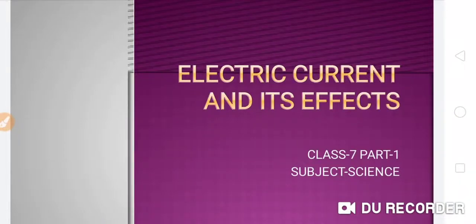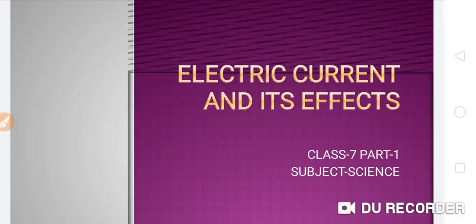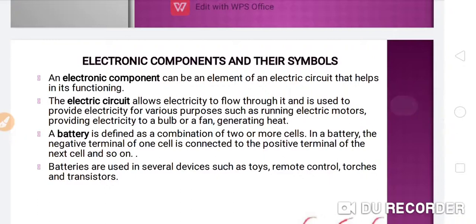Hello students, this is Sudipya Do from Spectrum Chemistry. If you are first time listening to my channel, please like and subscribe and press the bell icon to get the best explanation of NCERT book Class 7th subject Science. Today we are going to start a new chapter: Electric Current and Its Effects. This is the first part of this chapter, so let's start.